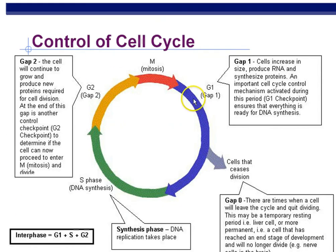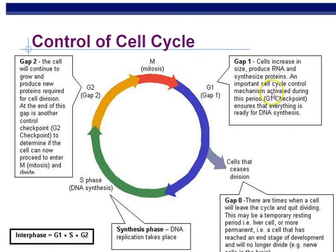The cell cycle starts with G1. G1 + S + G2 is called interphase — 'inter' means between, as in between cell divisions. During G1, the cell grows a bit and carries out normal activities — detoxifying if it's a liver cell, twitching if it's a muscle cell, conducting impulses if it's a neuron. Some cells like neurons and muscle cells enter G0, where they stop dividing. The cell is still alive in G0, it just isn't dividing anymore.